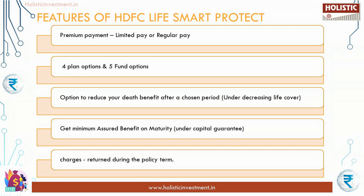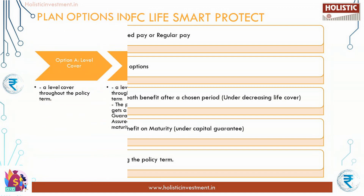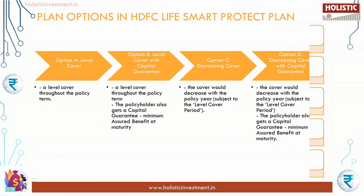Some of the charges are returned during the policy term. Now let us look at the four plan options under HDFC Life Smart Protect. Option A - Level Cover: this plan option provides a level cover throughout the policy term. Option B - Level Cover with Capital Guarantee: this plan option also provides a level cover throughout the policy term, and the policyholder gets a capital guarantee in the form of minimum sum assured benefit at maturity.